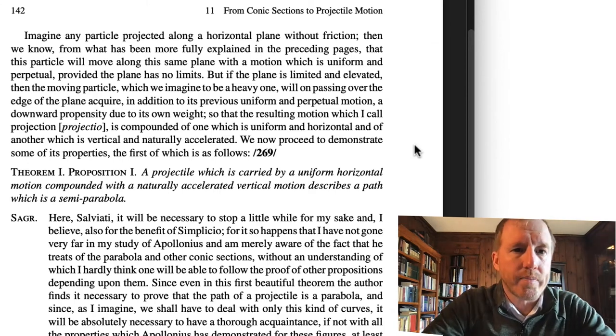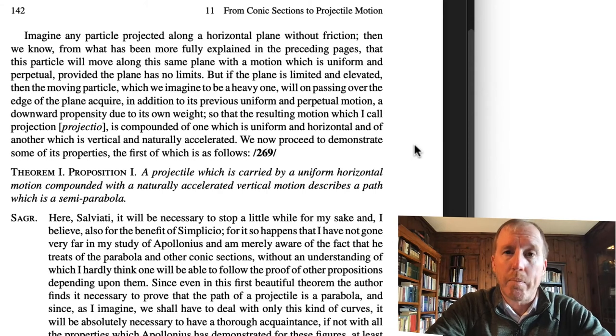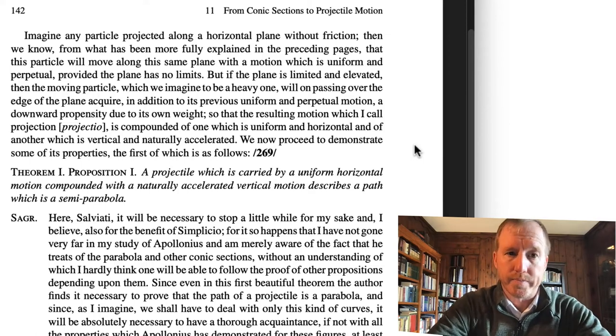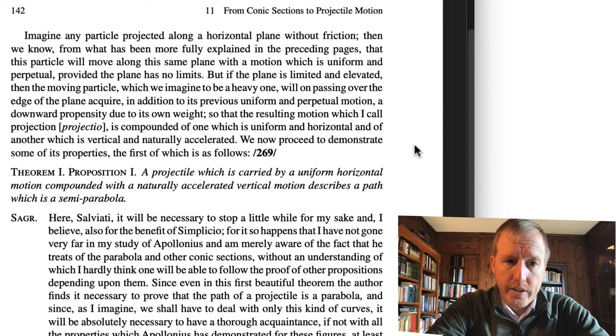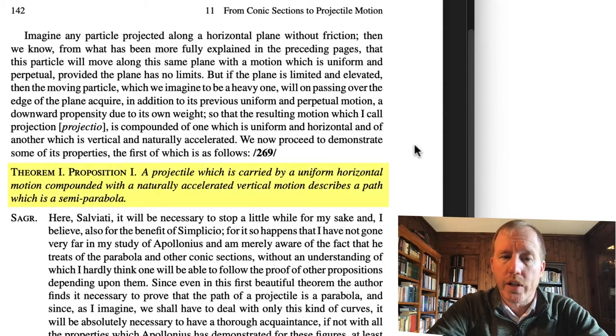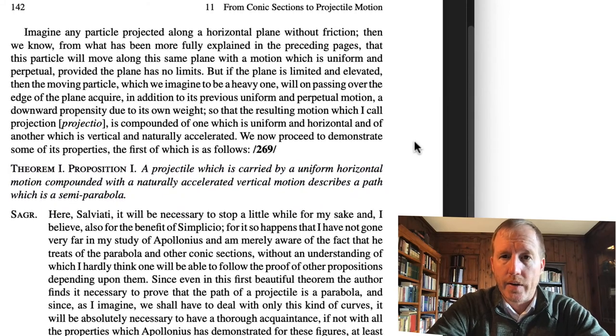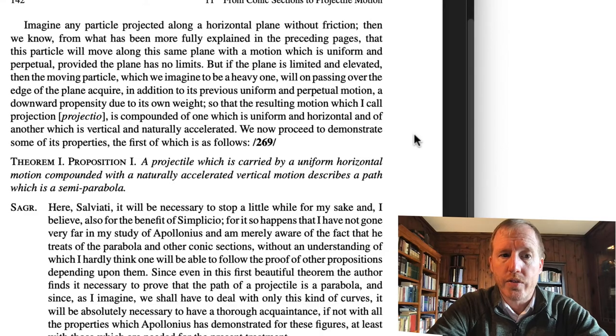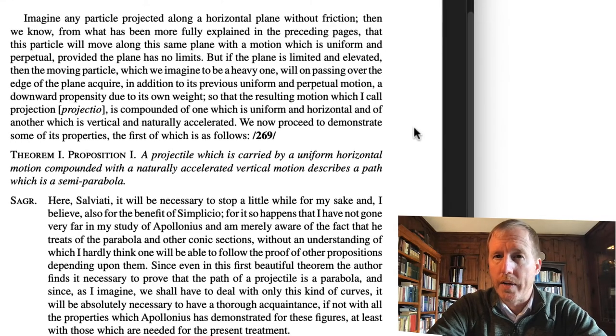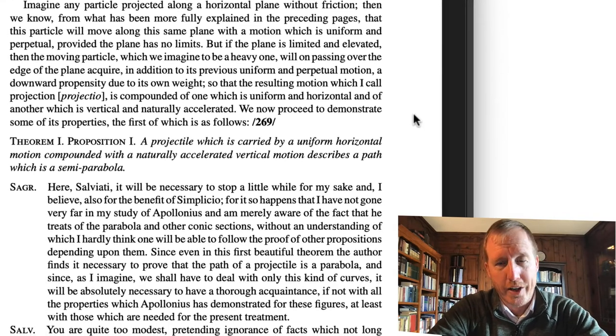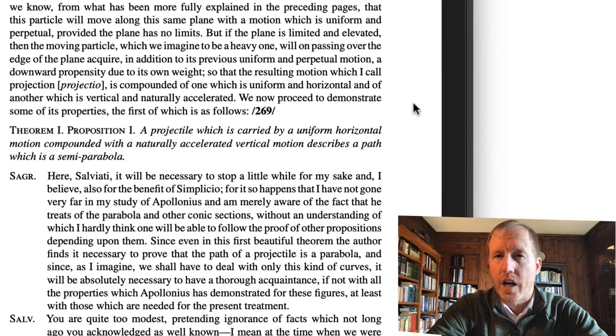He says that he's going to demonstrate some of the properties of this motion that this projectile undergoes, the first of which is as follows. And here he says Theorem 1, Proposition 1: A projectile which is carried by a uniform horizontal motion compounded with a naturally accelerated vertical motion describes a path which is a semi-parabola or a half-parabola. Now, after having defined this, you have Segredo and Simplicio chiming in and offering a few comments. So I'll go ahead and read these because these are kind of fun to read, and I'll comment on them as I go.